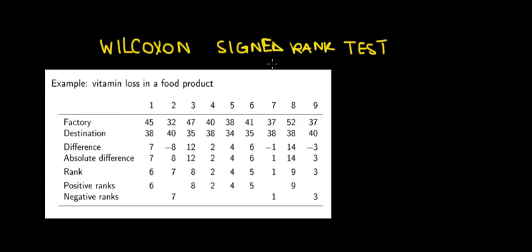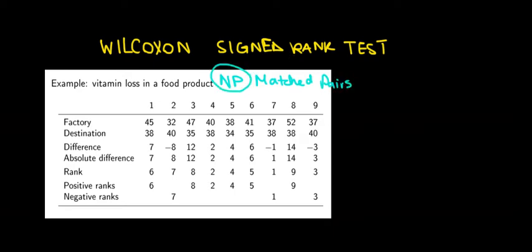Let's have a look at the Wilcoxon signed rank test. This is a non-parametric test with matched pairs. A non-parametric test is one where we're not interested in the parameter values — not interested in the actual values of the mean — but we're interested in the distributions. We're interested in whether we have the same medians, the same middle values, in both distributions.